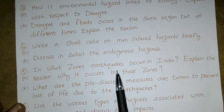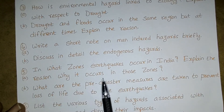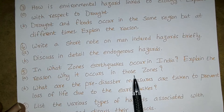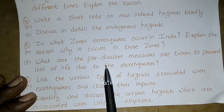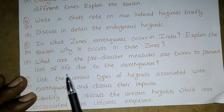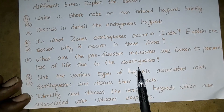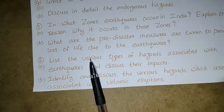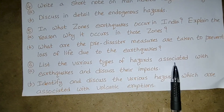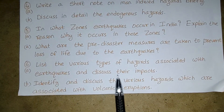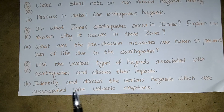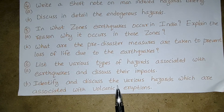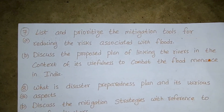Fifth question (a): In what zones do earthquakes occur in India? Explain the reason why they occur in those zones. Fifth question (b): What are the pre-disaster measures taken to prevent loss of life due to earthquakes? Sixth question (a): List the various types of hazards associated with earthquakes and discuss their impacts. Sixth question (b): Identify and discuss the various hazards associated with volcanic eruptions.